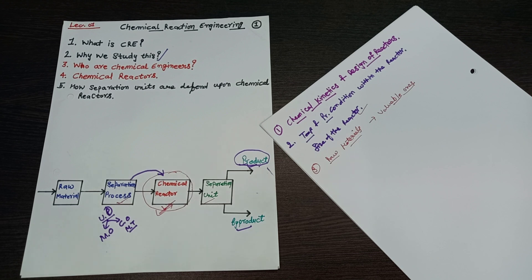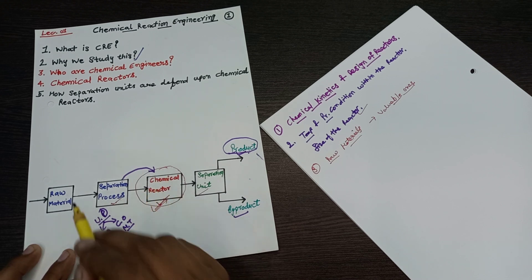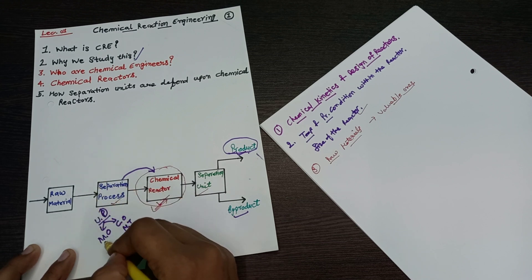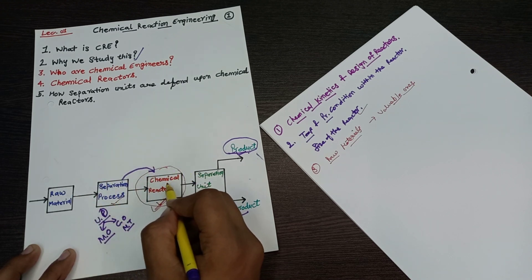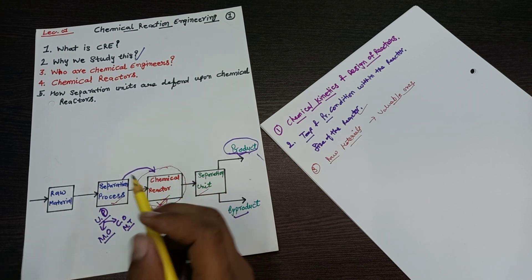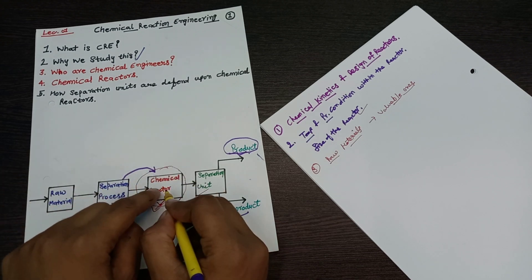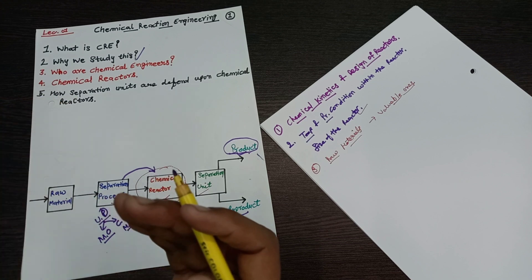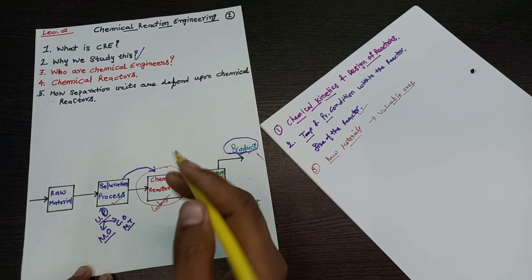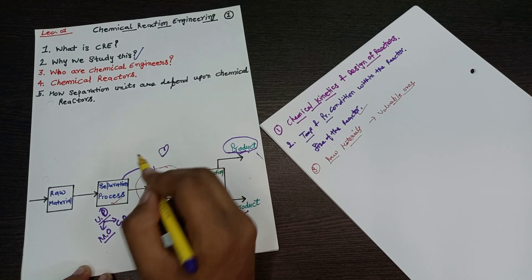The fourth topic, which is most important, is chemical reactors. What are chemical reactors? Looking at the diagram, you can see that after the separation process — which may be a mechanical operation reducing the size of coarse particles — the material goes into the chemical reactor. There, one material is converted into another; the main heart of the process is happening there. The raw or intermediate material becomes the pre-final product.